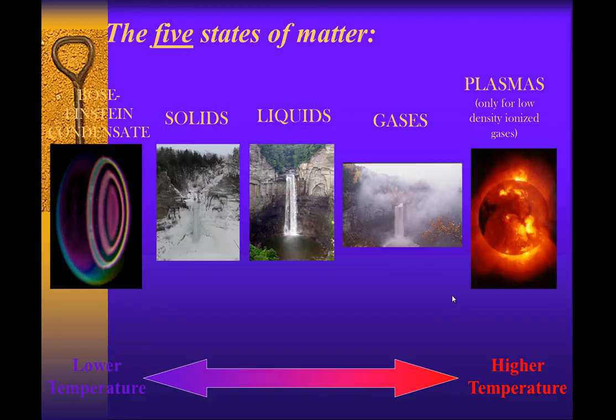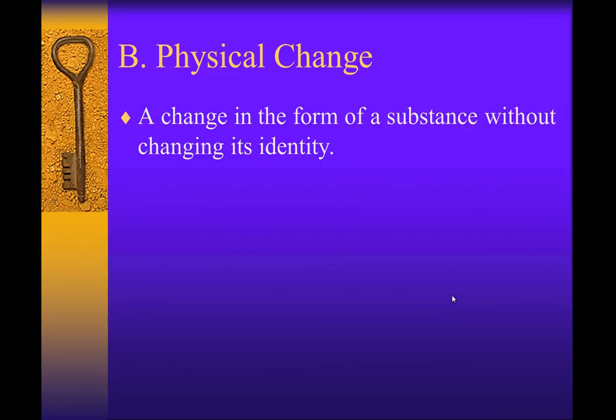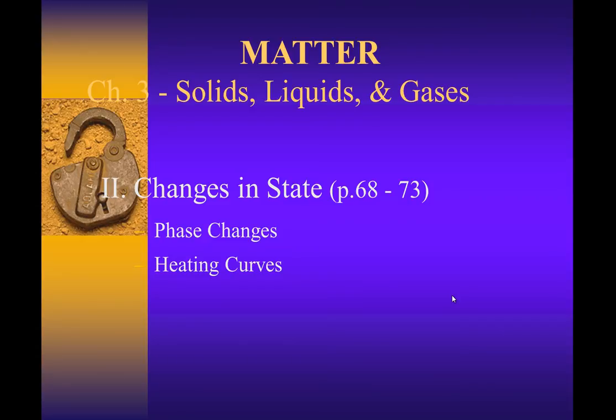So there you have it, the five states of matter: Bose-Einstein condensate, solids, liquids, gases, and plasma. And when we do physical changes—that's changing from a solid to a liquid or any of your phase changes—your properties remain the same. Most of the time it's reversible. You can use it to separate mixtures, which we'll get into. Alright, and we're going to stop there.